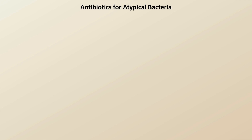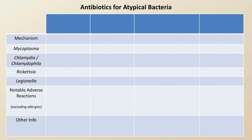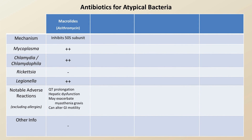There are only four options for treatment of atypical bacteria. First are the macrolides. For multiple reasons, azithromycin is the macrolide of choice here. It inhibits the 50S ribosomal subunit and shows excellent activity against Mycoplasma, Chlamydia, and Legionella, but pretty minimal activity against Rickettsia.